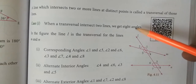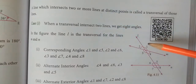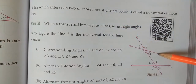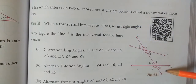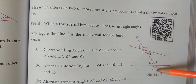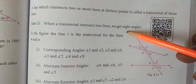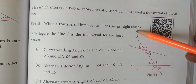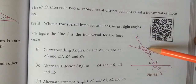A line which intersects two or more lines. In this figure, we will draw the transversal. So this line is the transversal. When a transversal intersects two lines, we get eight angles formed.